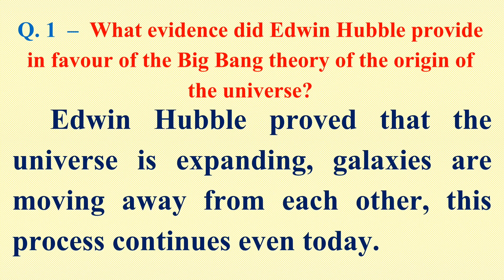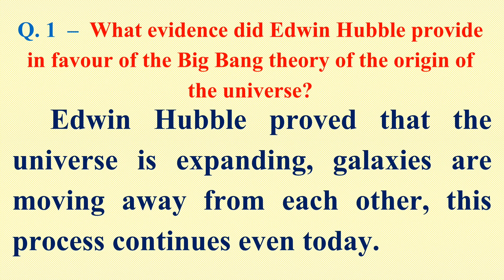Question number 1: What evidence did Edwin Hubble provide in favour of the Big Bang Theory of the origin of the universe? The Big Bang Theory was given by Edwin Hubble in 1920. Edwin Hubble proved that the universe is expanding, galaxies are moving away from each other, and this process continues even today. These are the evidences which Edwin Hubble gave in favour of the Big Bang Theory.